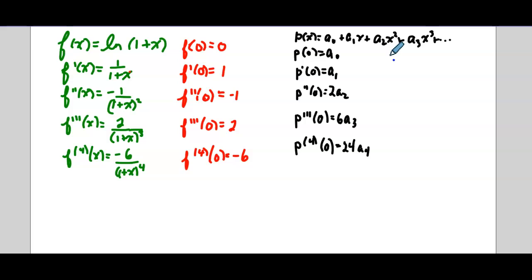Now we're going to set them equal to each other. So remember we want f(0) to equal p(0). So that means that a_0 is actually equal to 0. Then we want f'(0) to equal p'(0). So that means a_1 is 1. Then we want f''(0) to equal p''(0). So that means 2a_2 equals negative 1. So a_2 equals negative 1 half. Then the next one. So 6a_3 equals 2. So a_3 equals 1 third. And then 24a_4 equals negative 6. So a_4 equals negative 1 fourth.